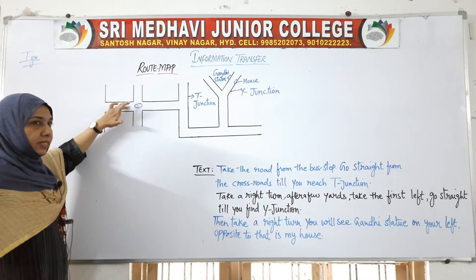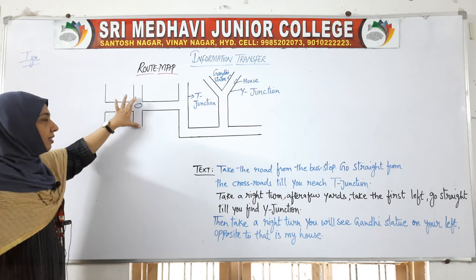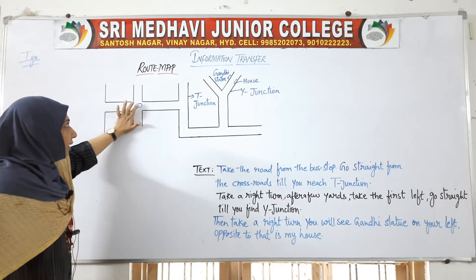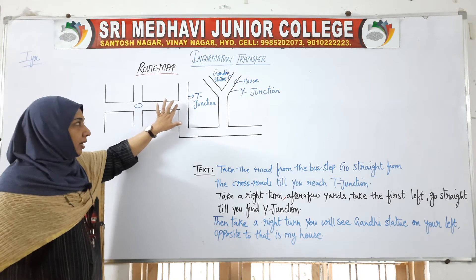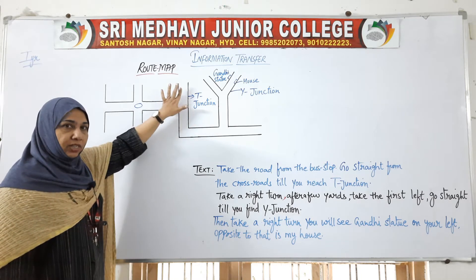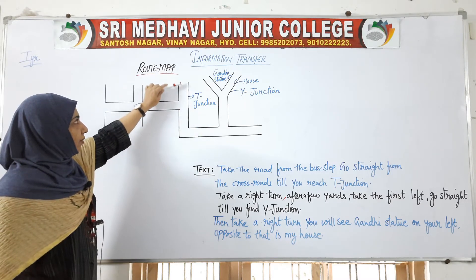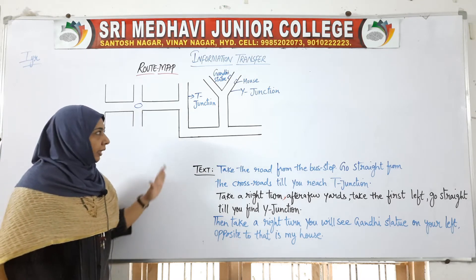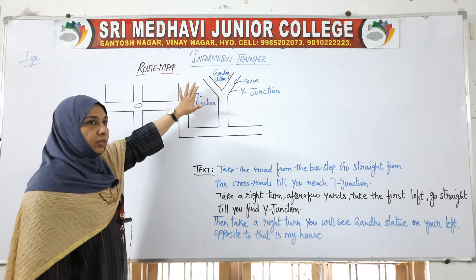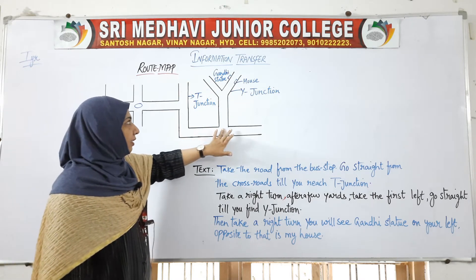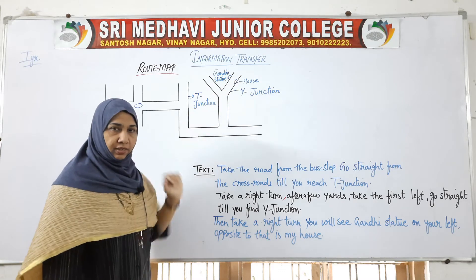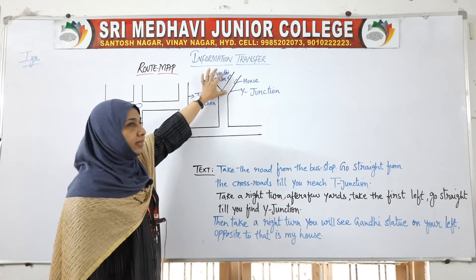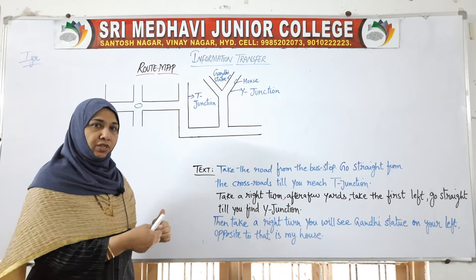When you are going from this side, you find a four-way junction — one, two, three, and four — this is the crossroads. Then you are walking again towards a T-junction, which looks like the letter T, as you can see here. After crossing, the route leads you to the Y-junction, which looks like the letter Y.